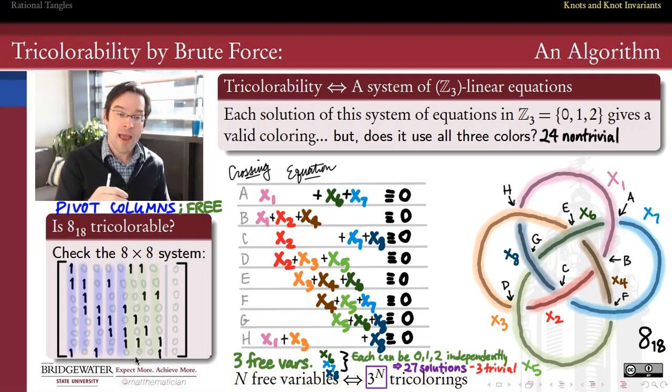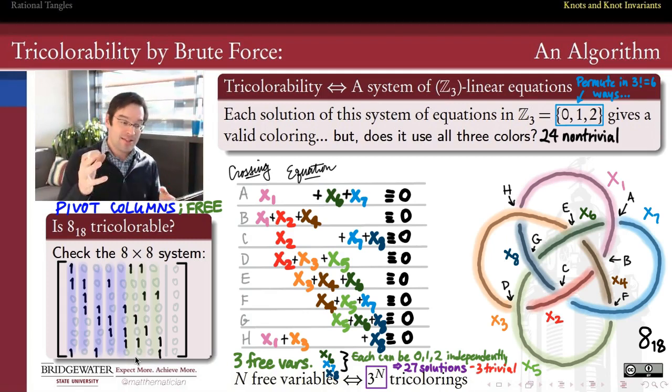Since we know that two colorations are not a thing, anything which is not using only one color has to be using all three. And therefore I have 24 non-trivial tricolorations for this particular knot. But they're not all fundamentally different because if I choose to call 0, 1, and 2 some other permutations, so if maybe 0 is green and 1 is red and 2 is blue, so I just permute 0, 1, and 2 in some ways, I'm going to get a different tricoloration, but it still has the same sort of tricolorability properties. I'm just sort of relabeling the names of the colors. And so if I want to, I can quotient out by that.